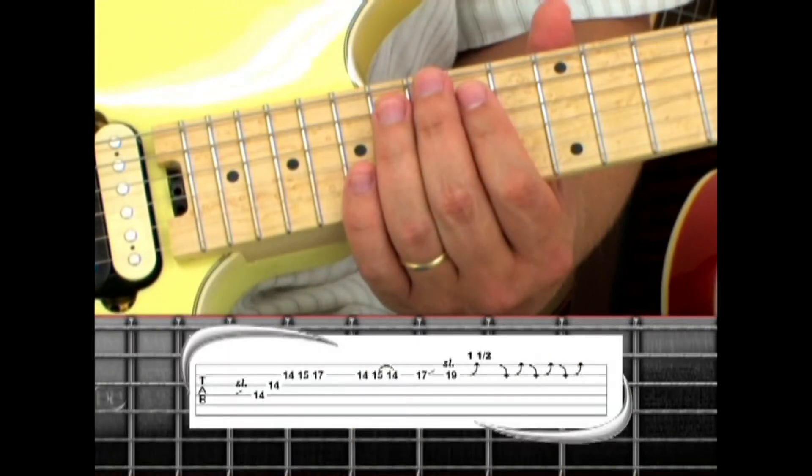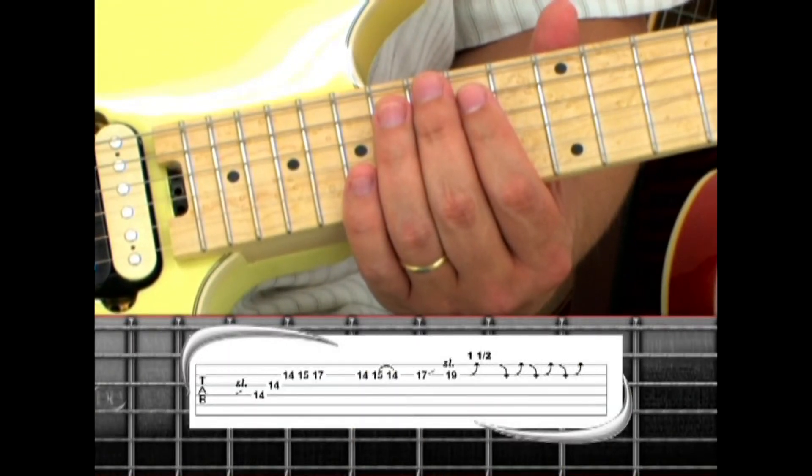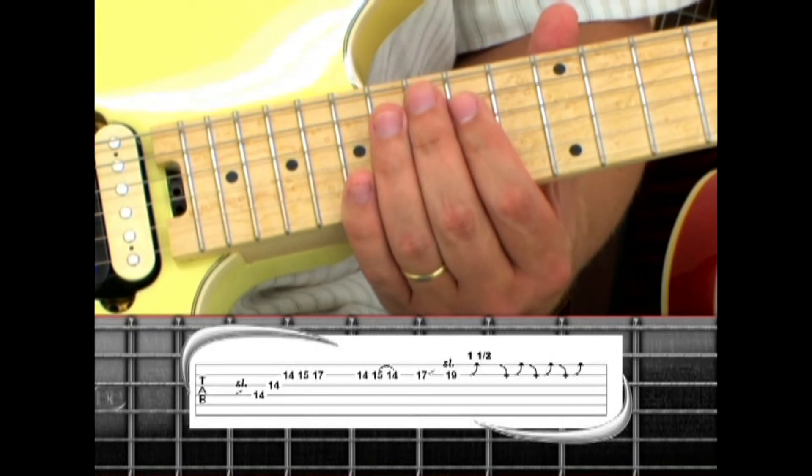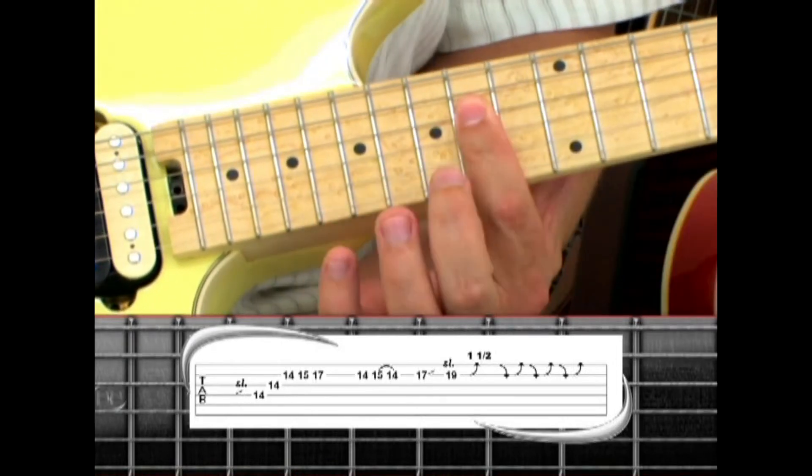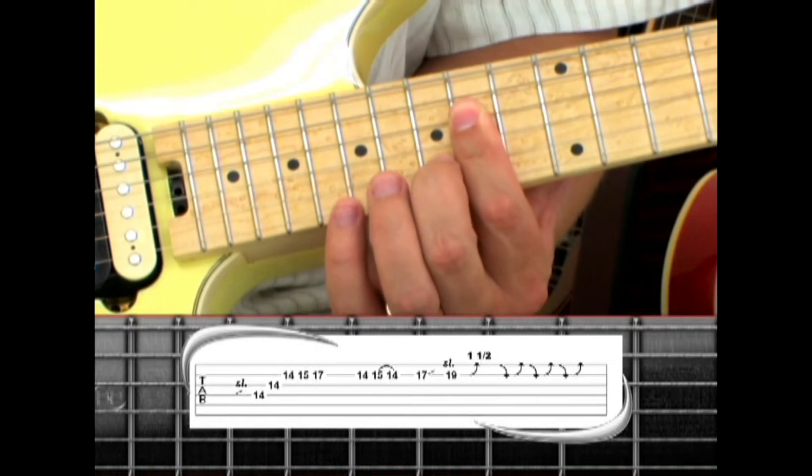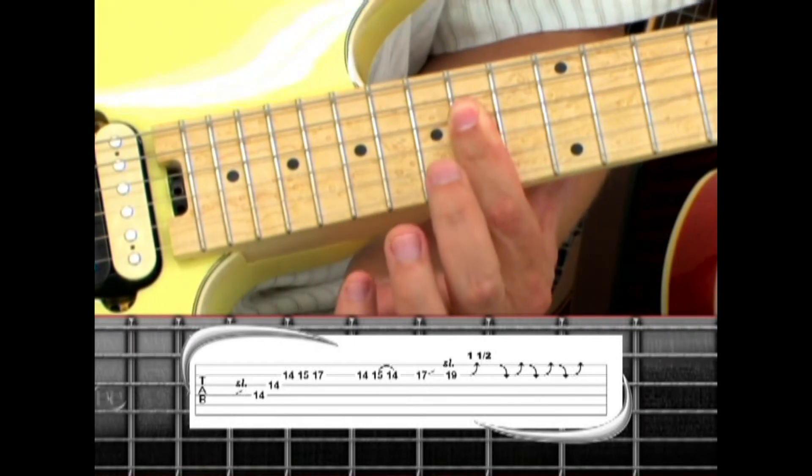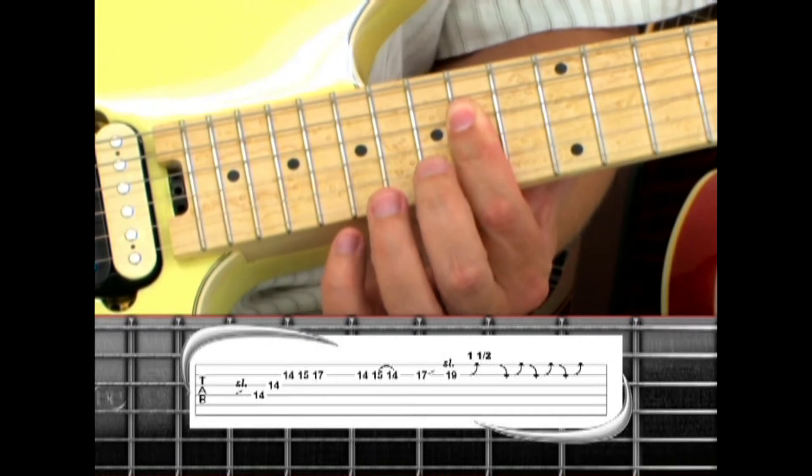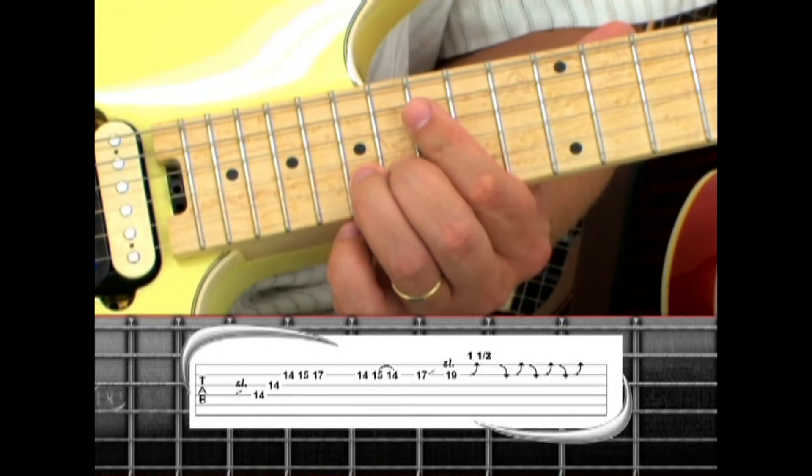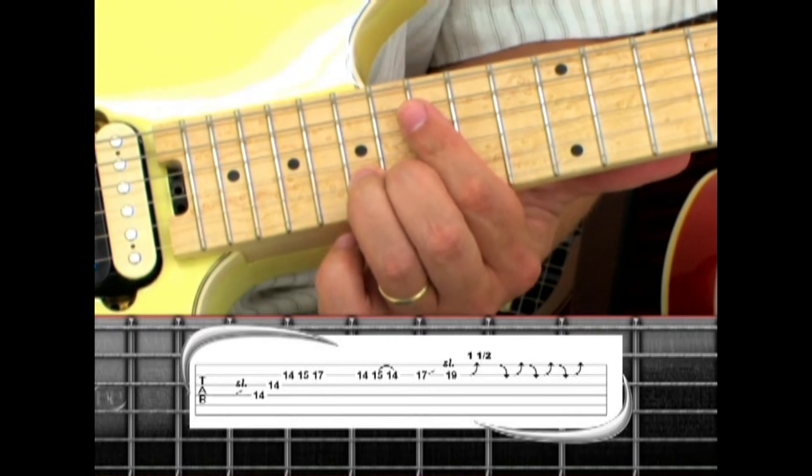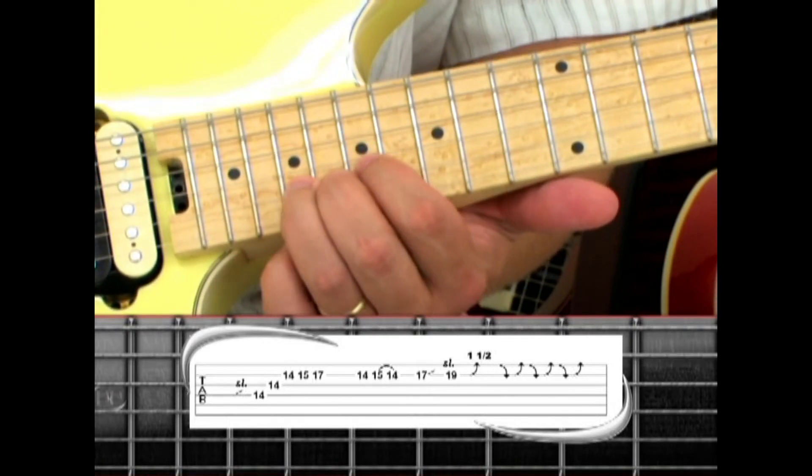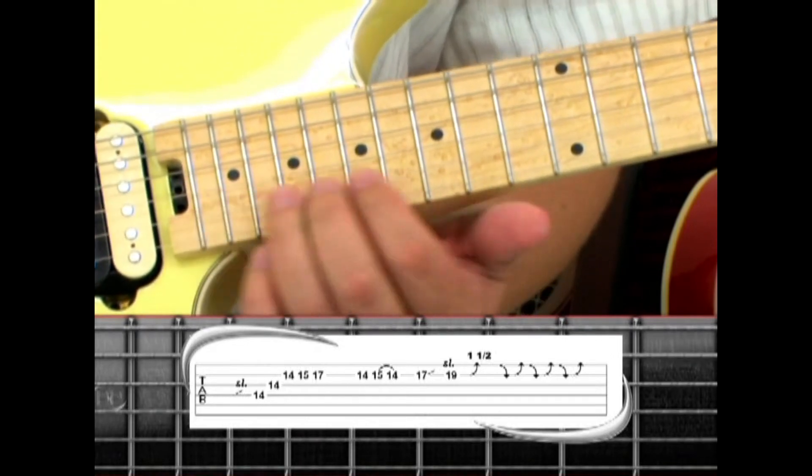On the 2nd solo, everything is the same, but the 2nd 4th fret A chord has a changeup. Slide up to the 14, walk up 14, 15, pull to 14, then the change is played on the 17th fret with a quick slide up to 19. Bend one and a half steps to match the pitch of the 22nd fret.